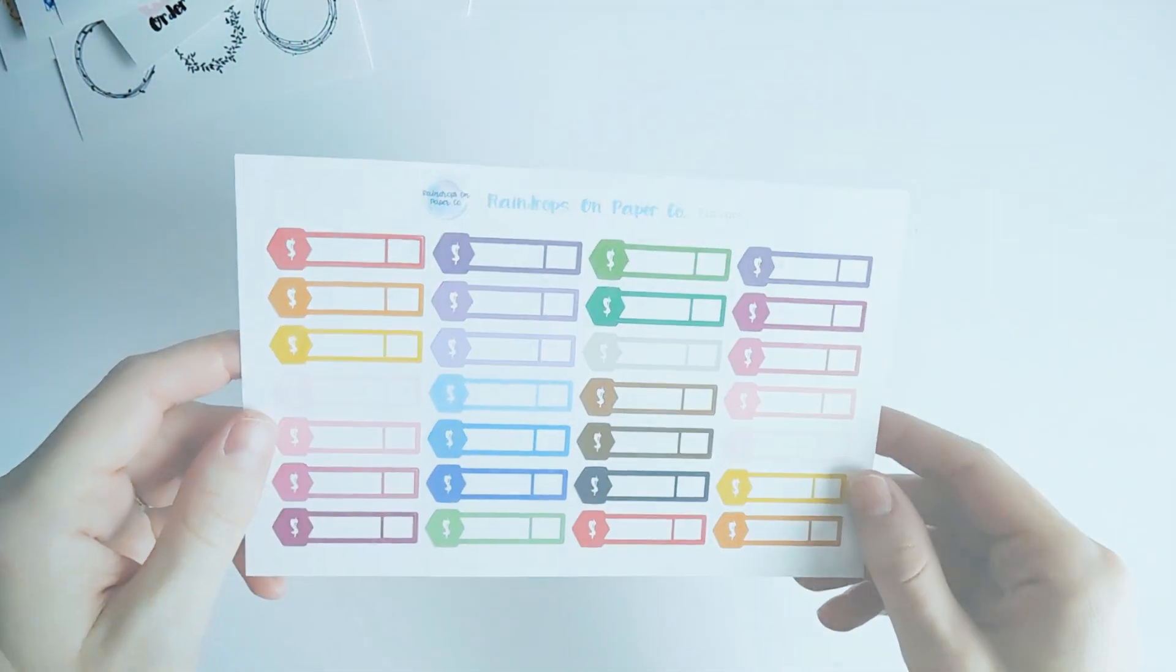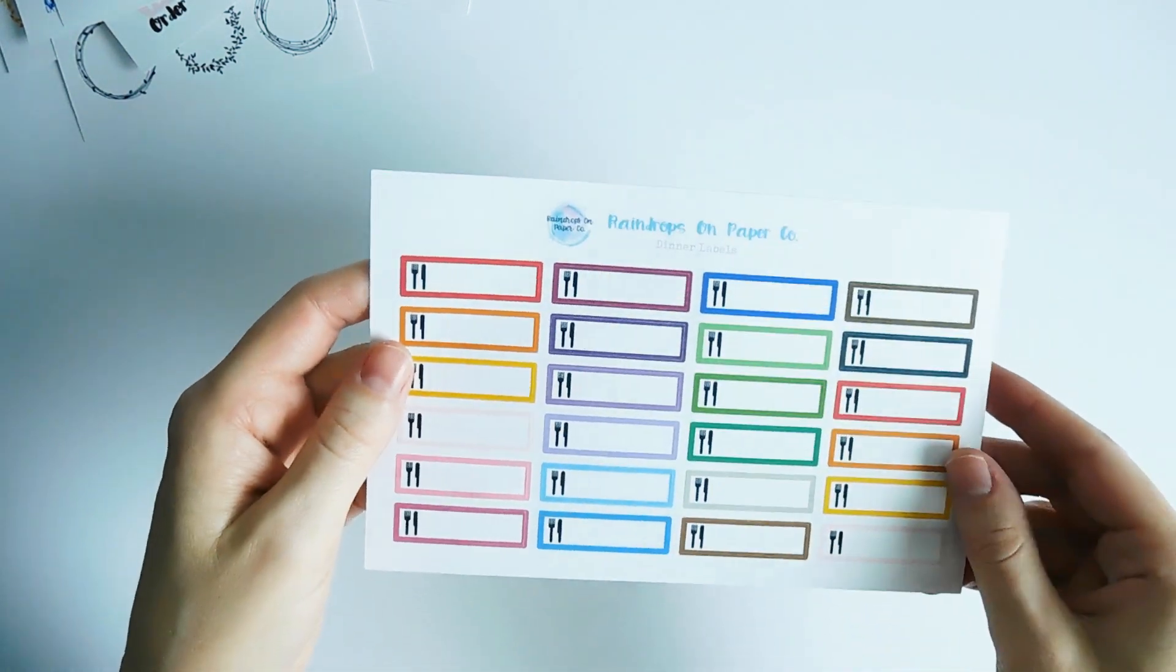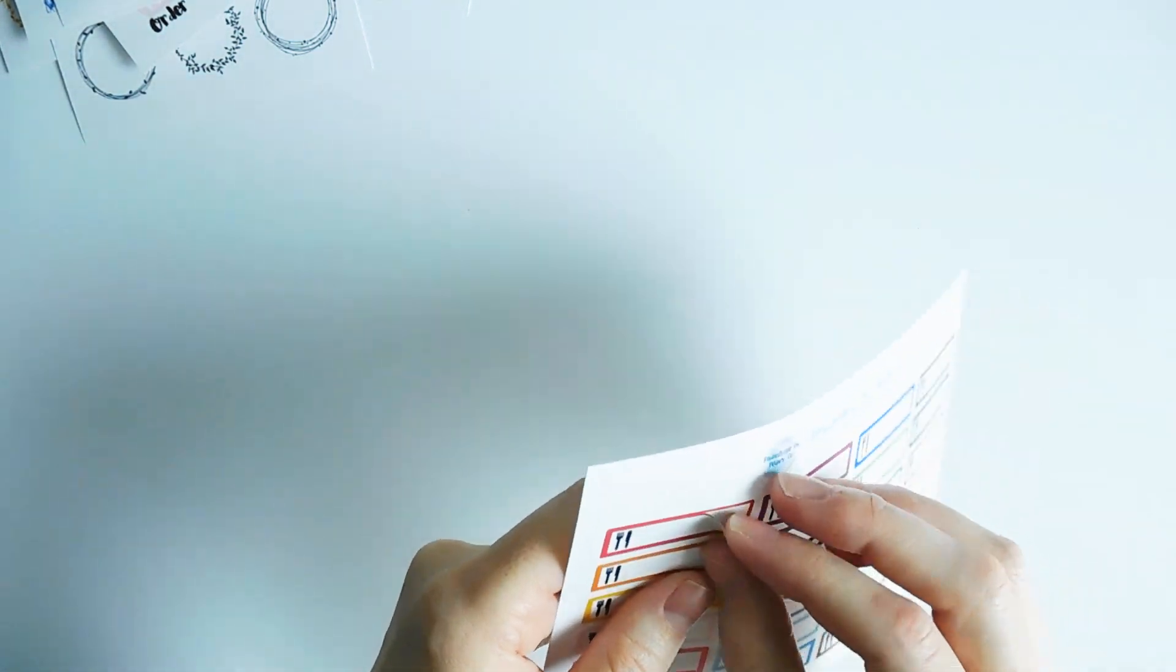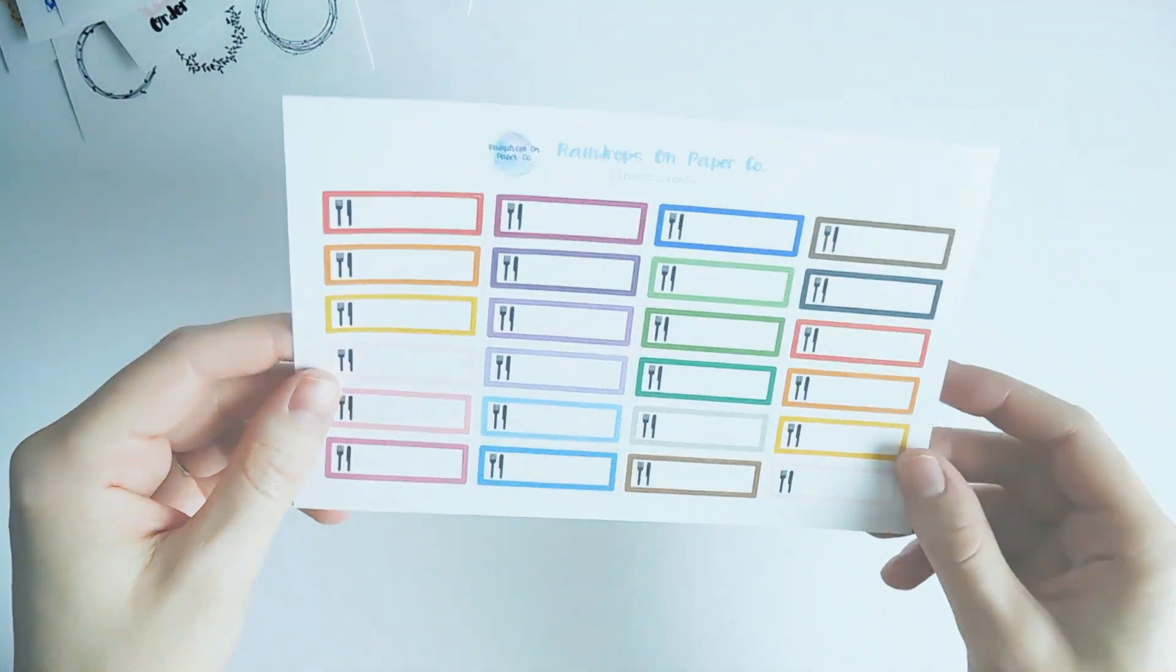I also offer these dinner labels. They're in quarter box size and they come in a variety of colors. And you can mark what you're having for dinner.